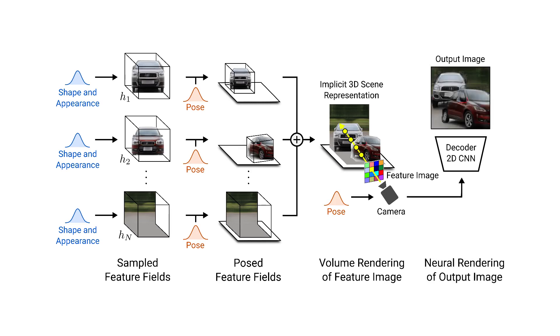This low-resolution feature image is then passed to a 2D neural renderer, which upsamples the image and outputs the final RGB rendering.